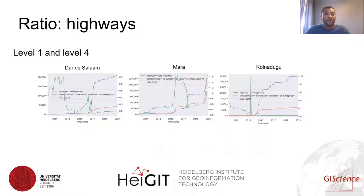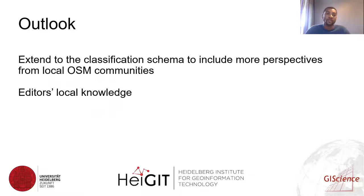We also computed a ratio — using highways as an example — to show the differences between levels. In this case we showed level one and level four, and you can see that the ratio between the two is quite large. As an outlook, the plan is to include more perspectives from local communities and also to group editor local knowledge into these levels to see how their mapping behaviors are evolving over time.